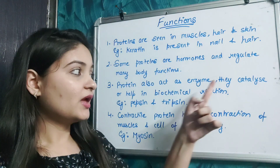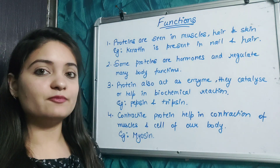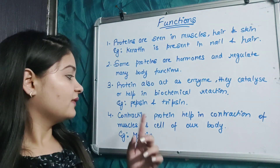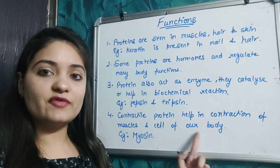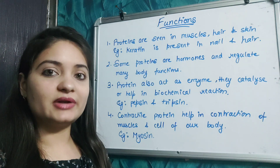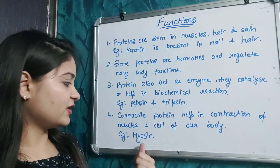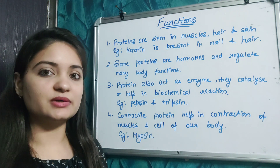Proteins also act as enzymes that catalyze biochemical reactions, for example trypsin and pepsin, which help in biological reactions. Contractile proteins help in the contraction of muscles and cells of the body — for example, myosin is a contractile protein. If you want to study the details of biochemistry, carbohydrates, and lipids, the link is in the description box.